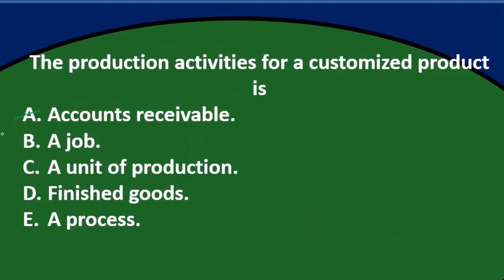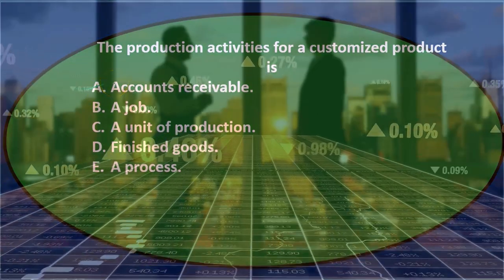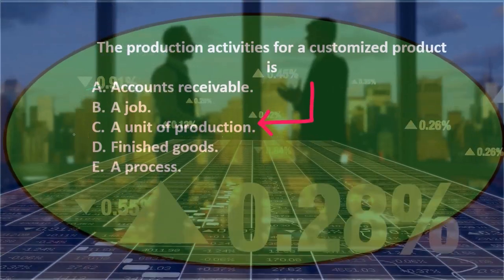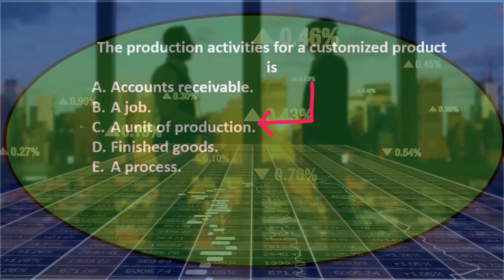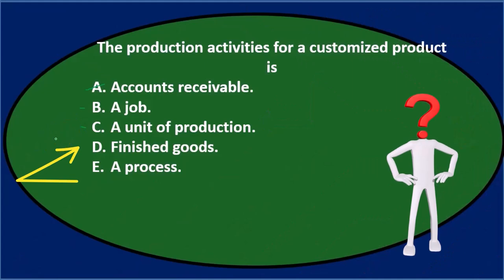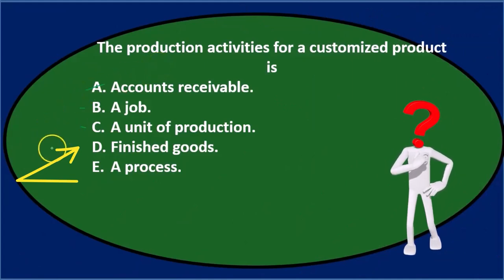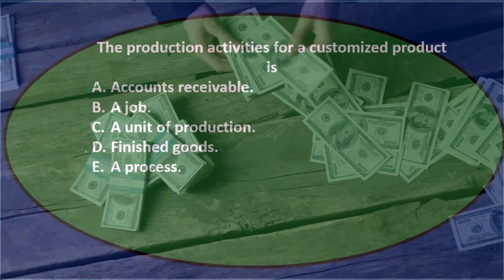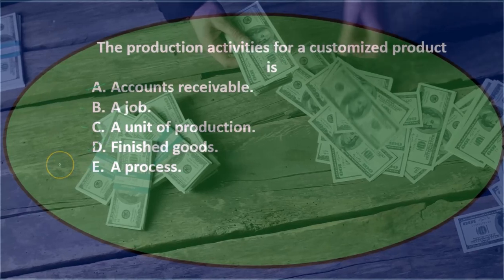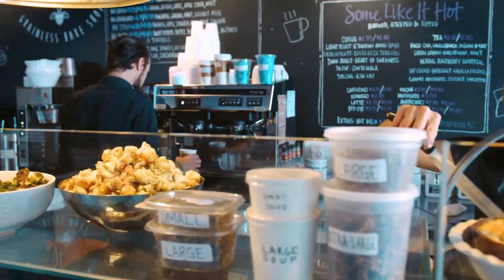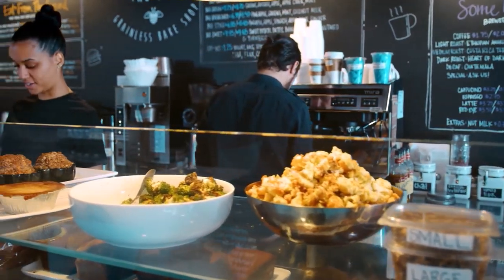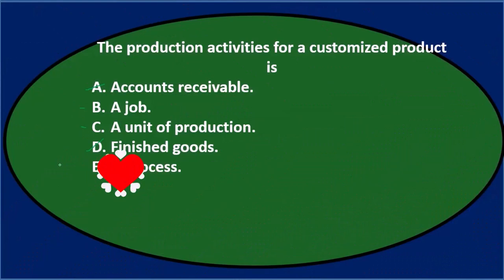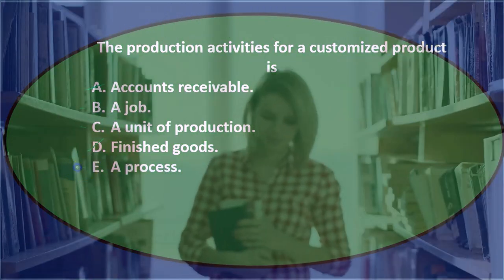B says a job — that's plausible because we're talking about a job cost system, the production activities for a customized product, so I'll keep that. C says a unit of production — that's possible, I'll keep that. D says finished goods — it may not be finished goods because it could be either type of inventory, work in process or finished goods. Finished goods is going to be all the goods finished, but it's not really breaking out which units are owed to who; it's grouped in finished goods and not the supporting documentation. E says a process — you could think it would be part of a process; I'll keep that for now.